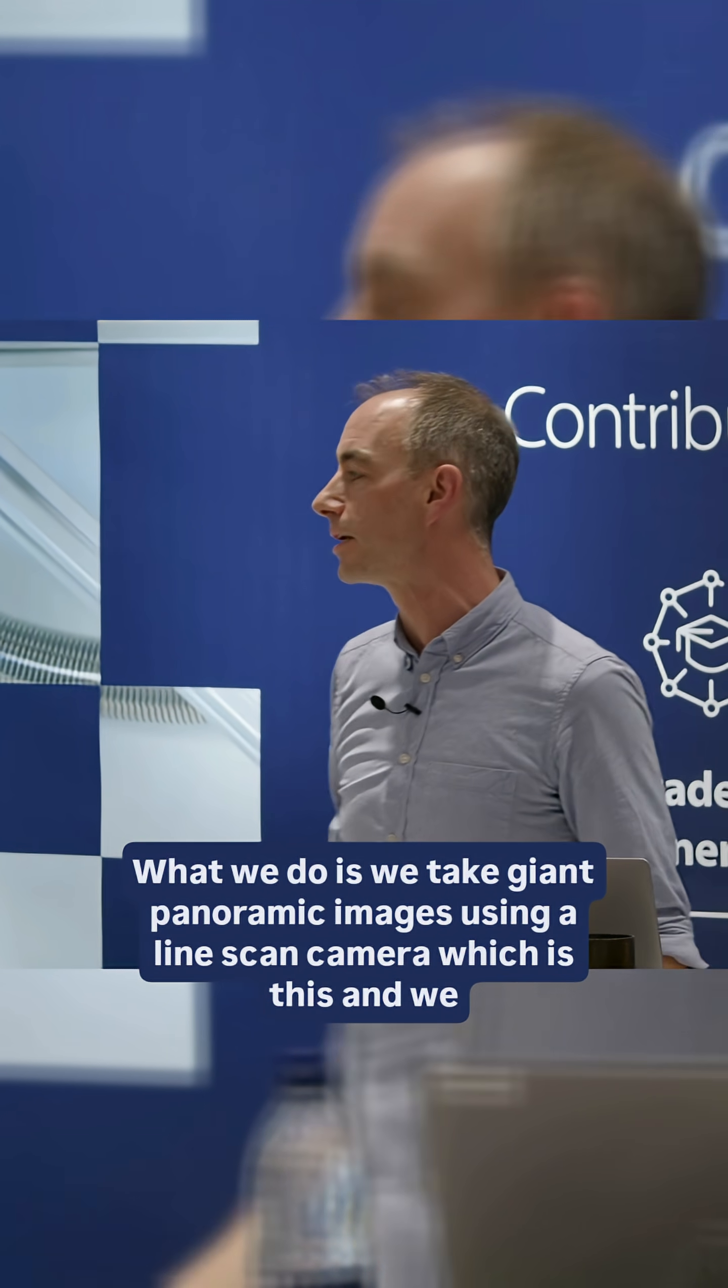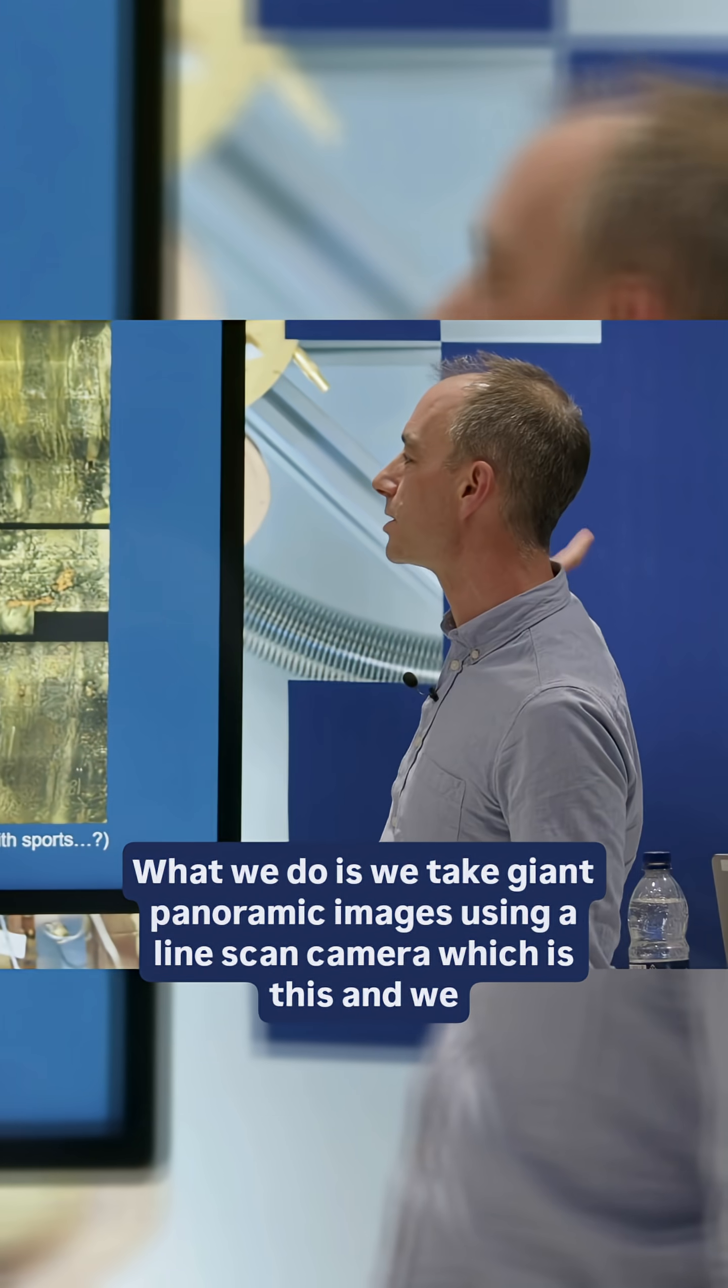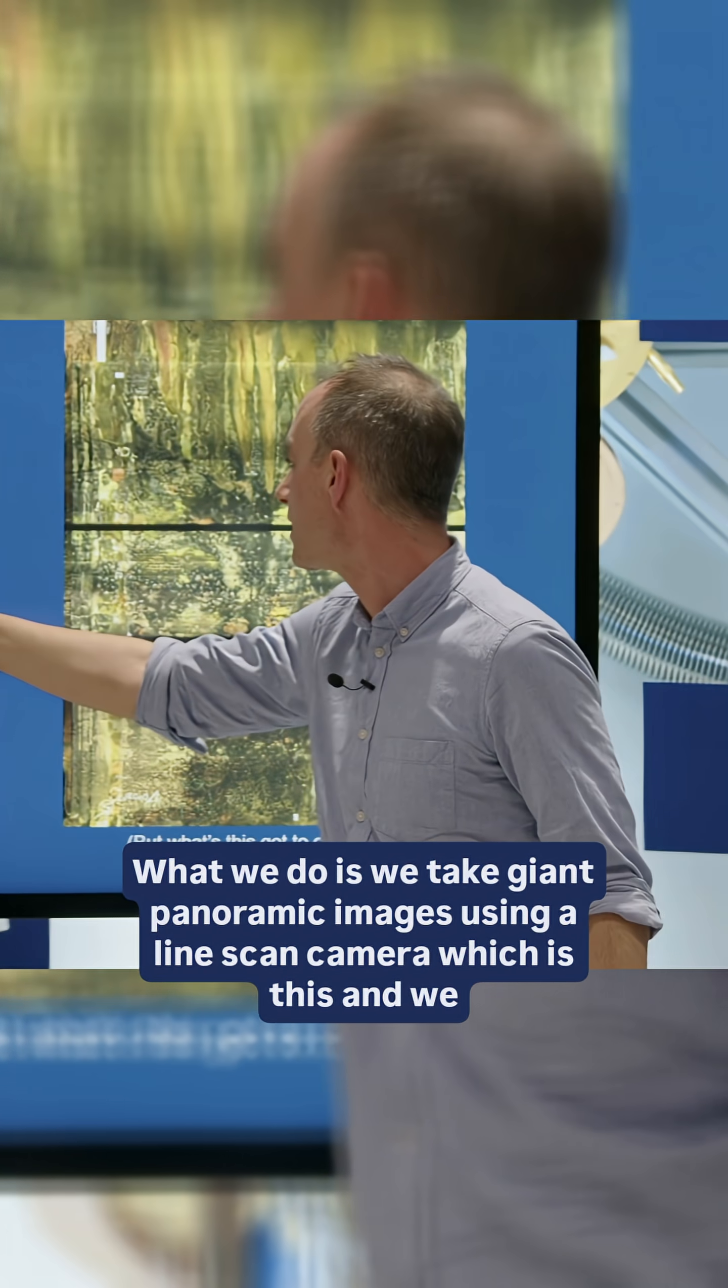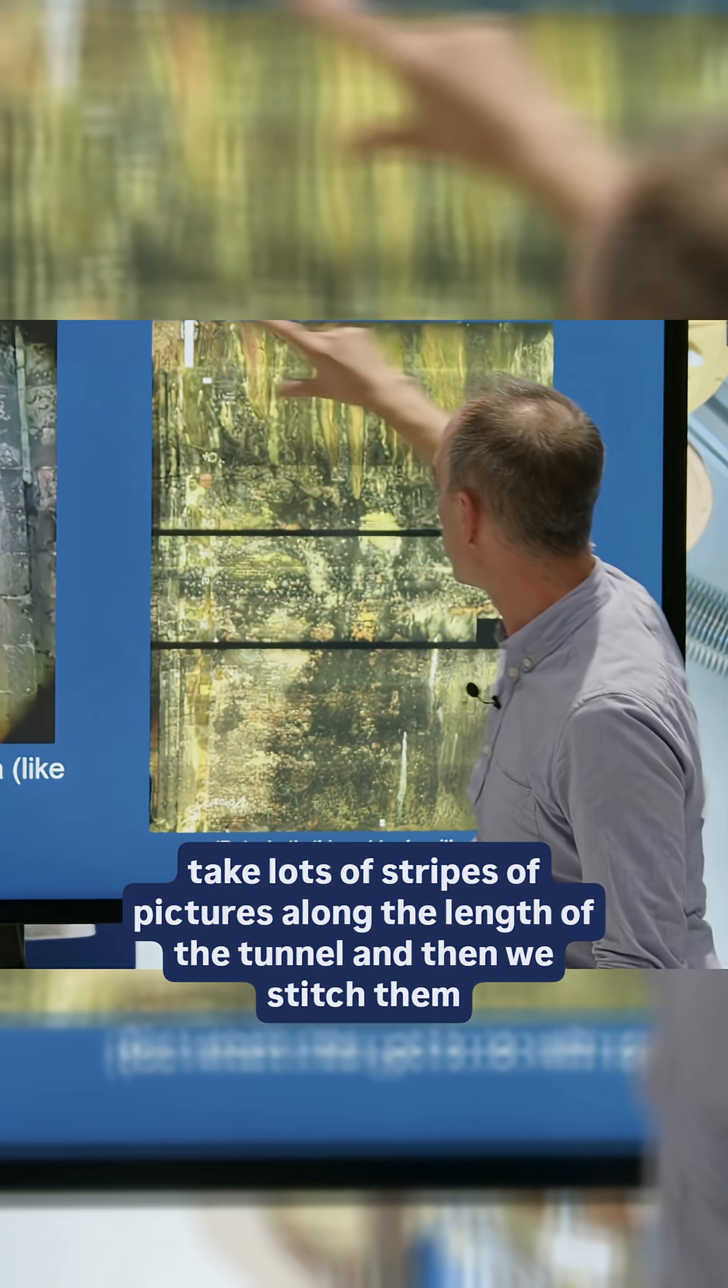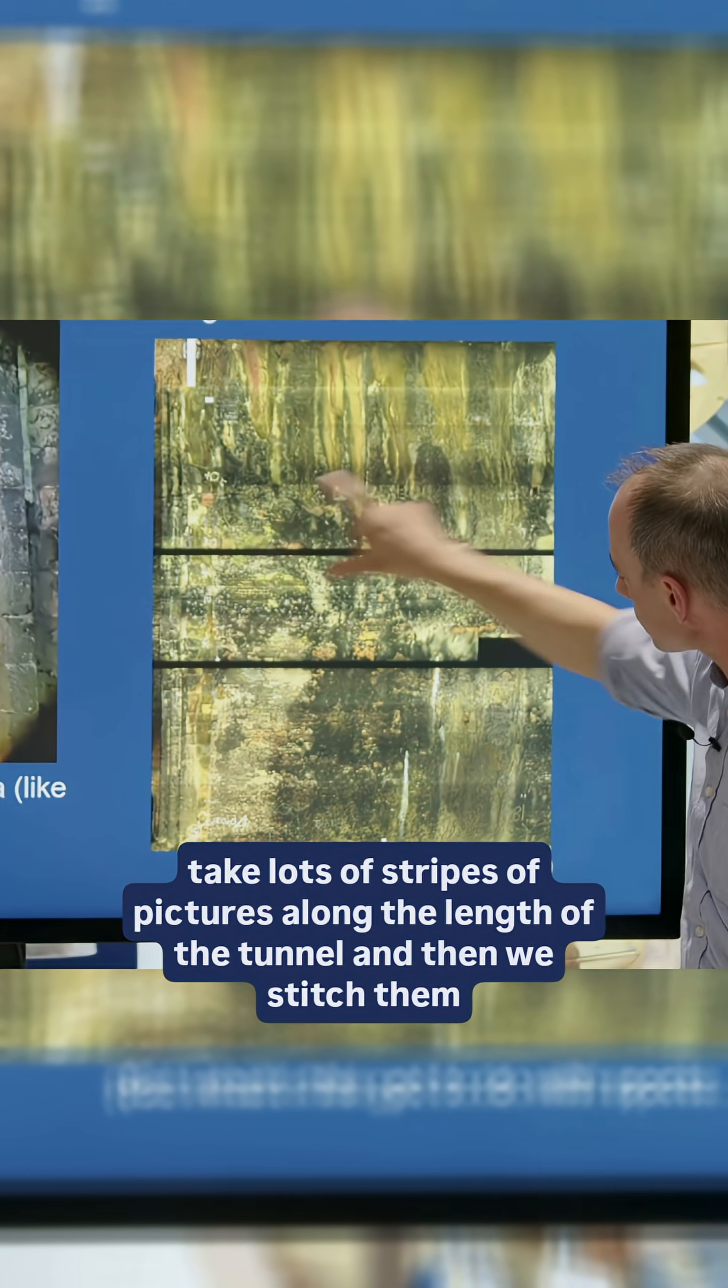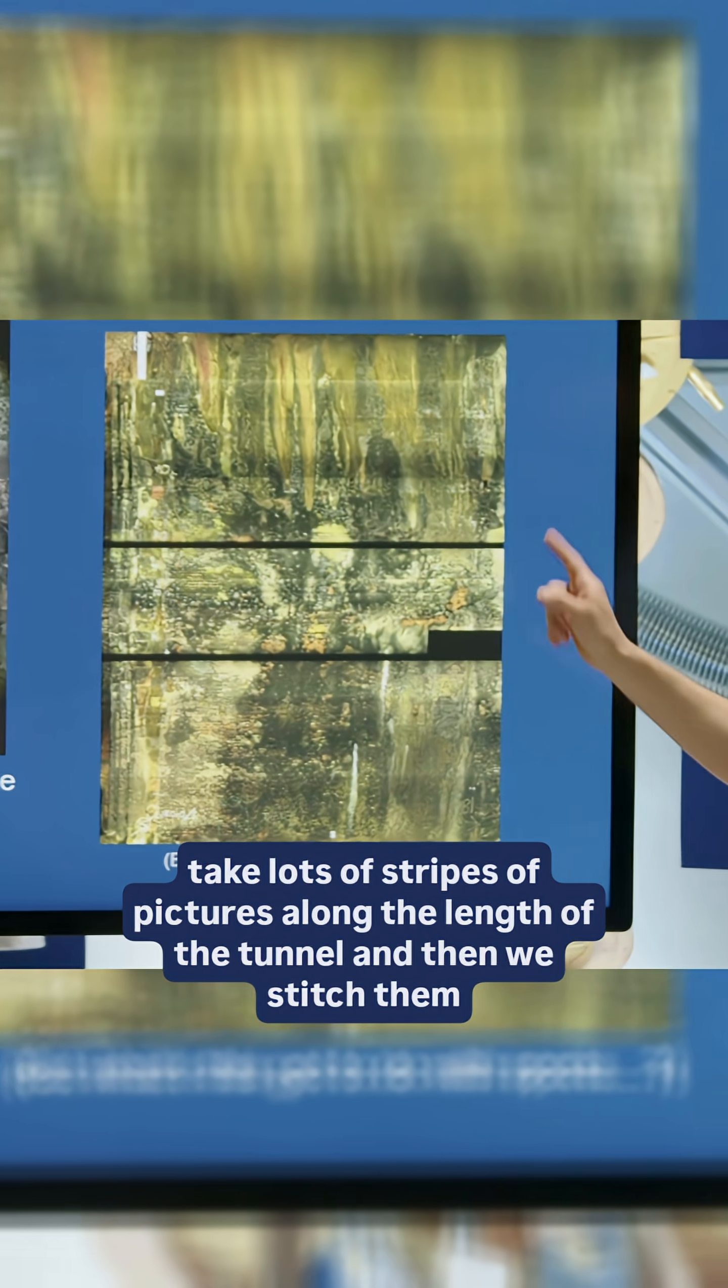What we do is we take giant panoramic images using a line scan camera, which is this, and we take lots of stripes of pictures along the length of the tunnel and then we stitch them together.